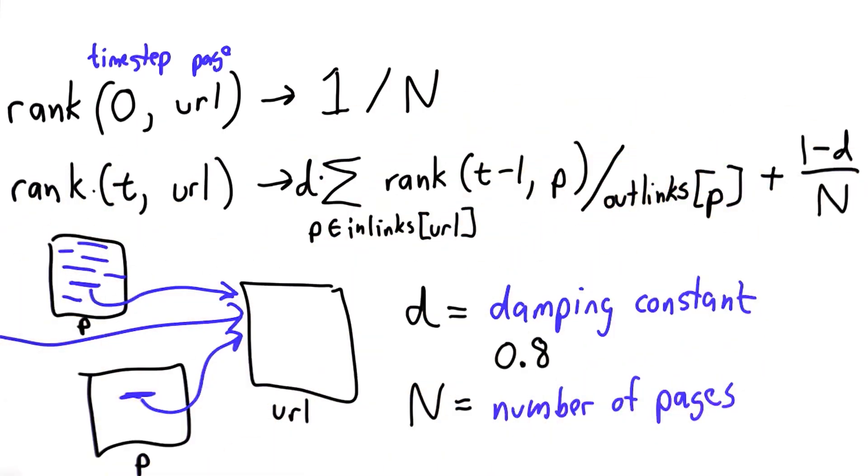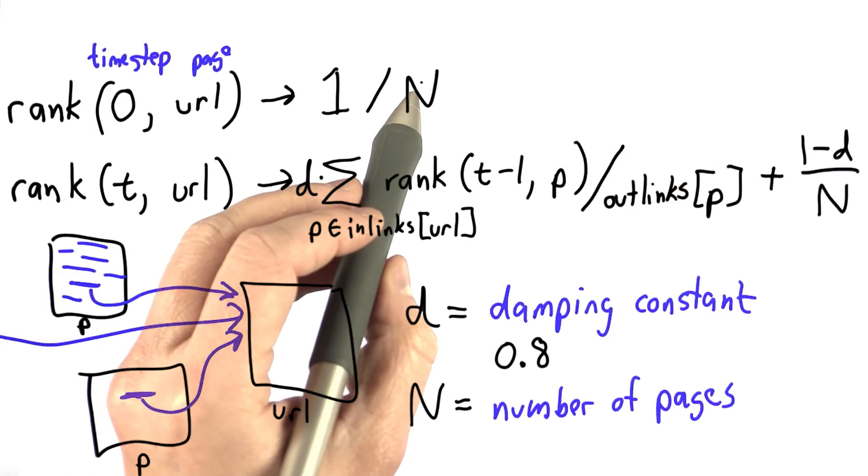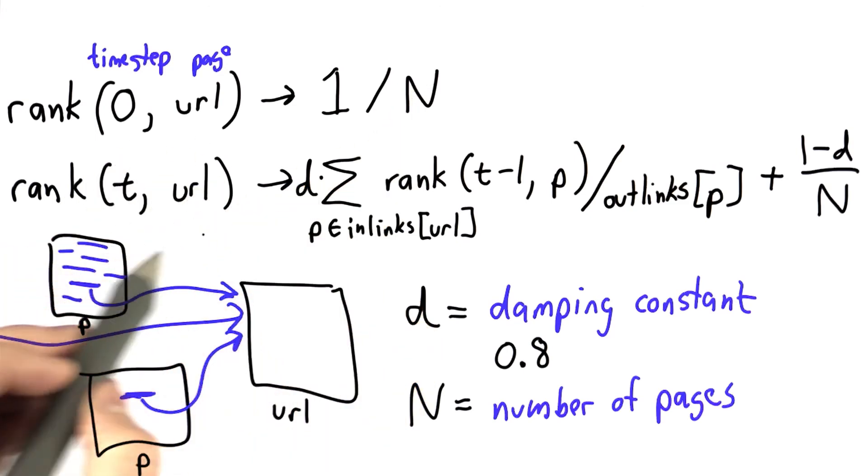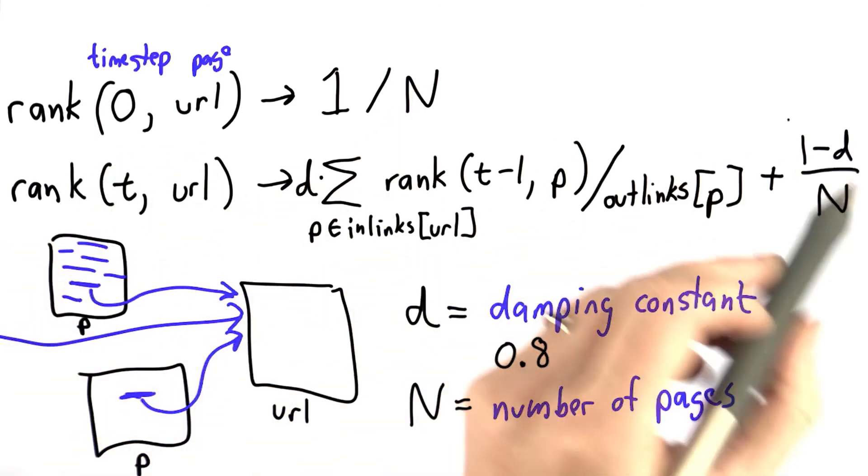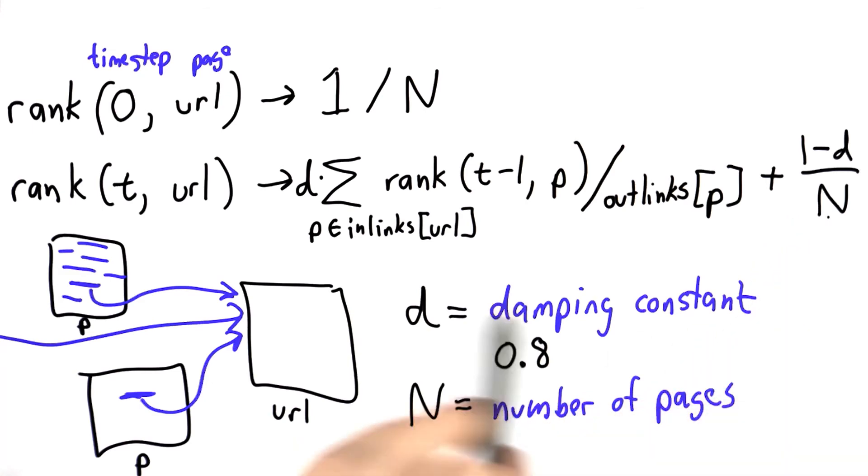Now we've got our recursive definition of PageRank. We start by initializing the rank at time step 0 to 1 divided by N. Then for as many time steps as we want, we keep improving our results by using this formula.